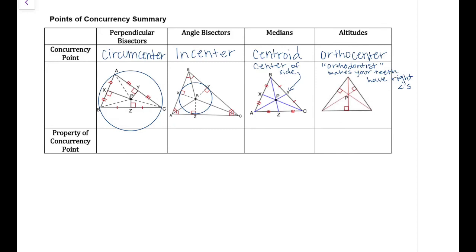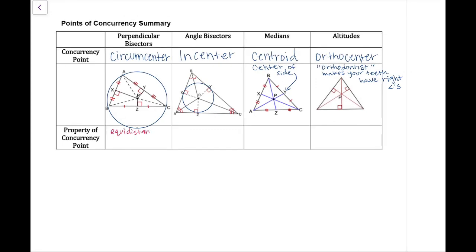The circumcenter, the property is it's equidistant from the vertices. That's why we have the circle. And the incenter, it's equidistant from the sides, which is why we have a circle inside. The centroid is the two-thirds, one-third. It's also your center of gravity. And there's not really a whole lot of properties on the orthocenter.